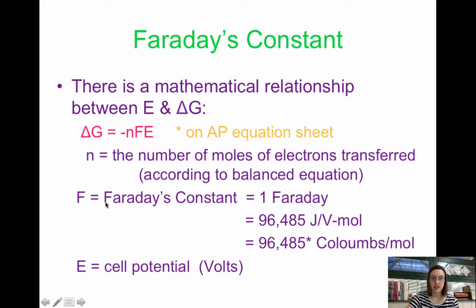F is Faraday's constant. This is a constant on your equation sheet. Faraday's constant equals one Faraday, and Faraday is just the quantity of charge on one mole of electrons. One Faraday is 96,485 coulombs per mole of electrons, or 96,485 joules per volt per mole of electrons. These are on your equation sheet.